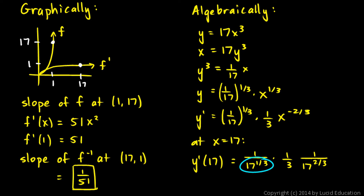you can see in the denominator 17 to the 1/3rds times 17 to the 2/3rds. Those two pieces right there multiply together just to give us 17. So this is 1 over 17 times 3, which is 1 over 51.